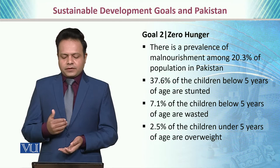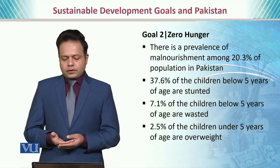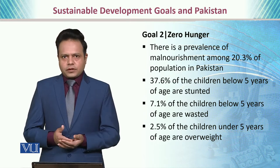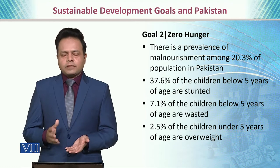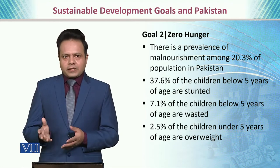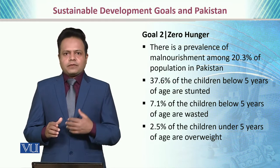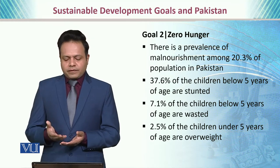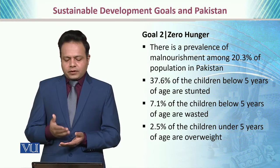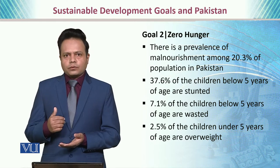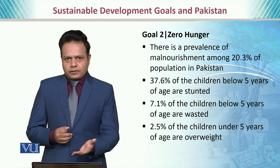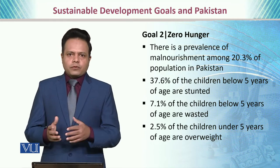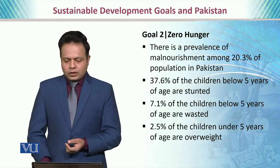77.1% of children below five years of age are wasted each year, and they die because of lack of adequate health and medical facilities as well as lack of food resources. 2.5% of children under five years of age are also considered to be overweight. The zero hunger goal has also not been achieved, and we are quite far from achieving that goal as well.